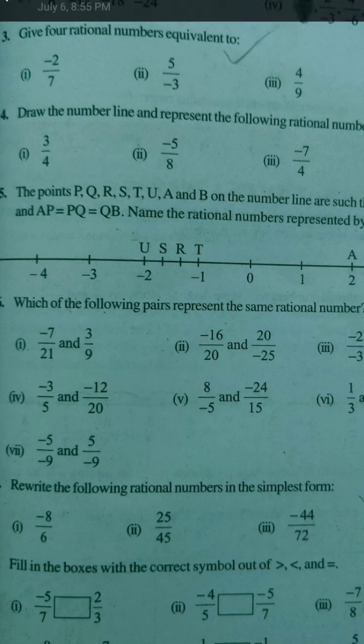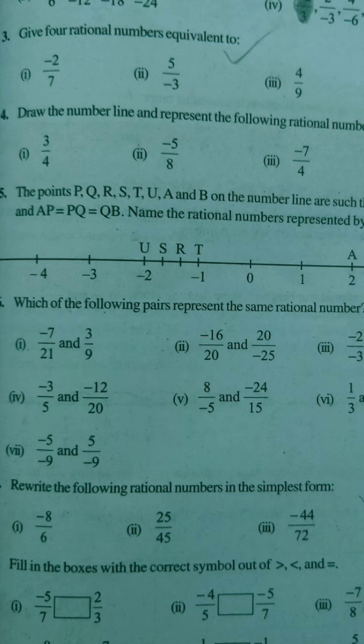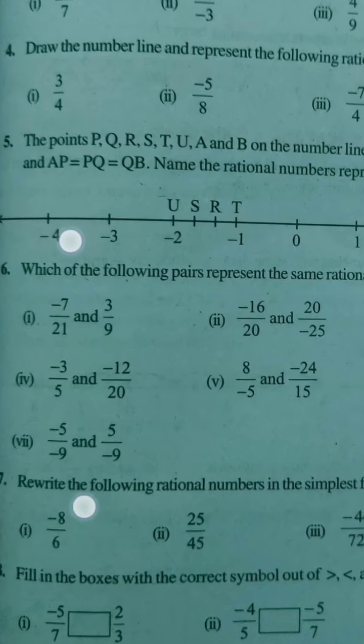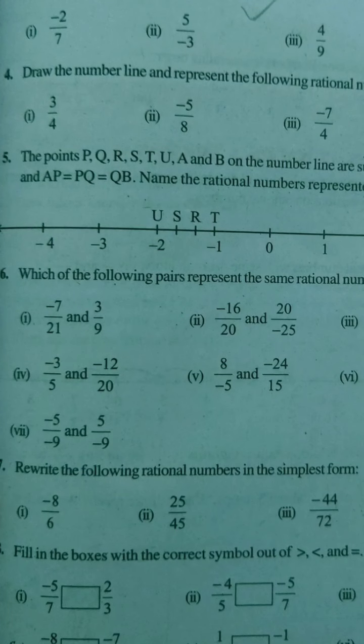Similarly, in the 7th part we have the same situation. One number is zero and the other is -7/6. Since -7/6 is a negative rational number and negative rational numbers are always the smallest, I don't need to do anything here either. It is very clearly seen that zero is greater than -7/6.